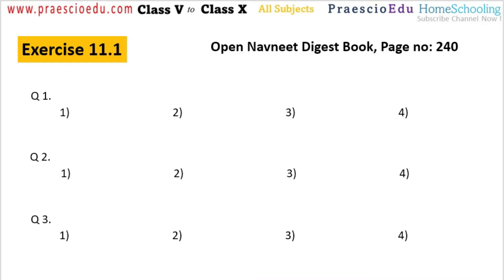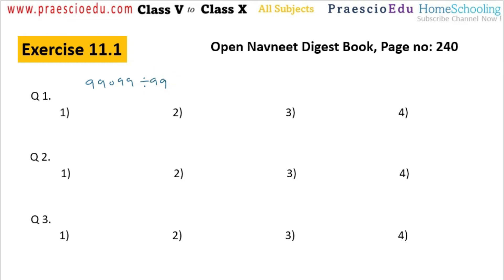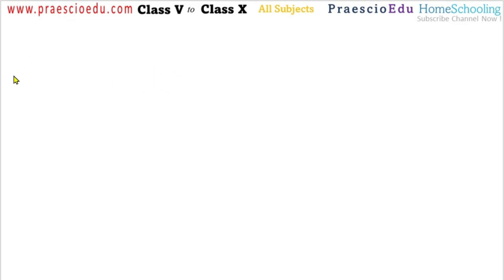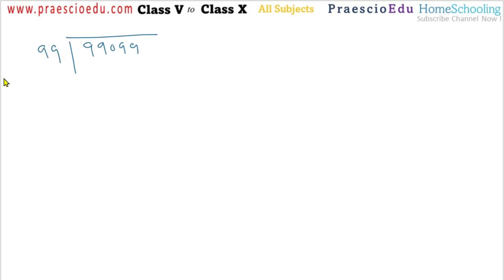So let's look at exercise 11.1. The first question is 99,000 divided by 99. I will solve this for you. Many places there is confusion about zeros, and many students make a small mistake here. So let's solve it using the regular method directly — we will not solve this orally, so that you understand properly.